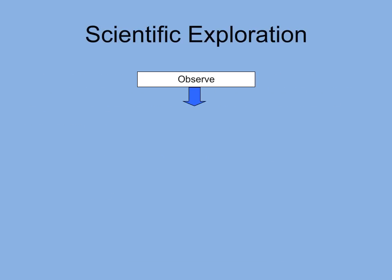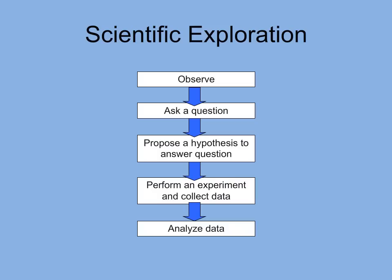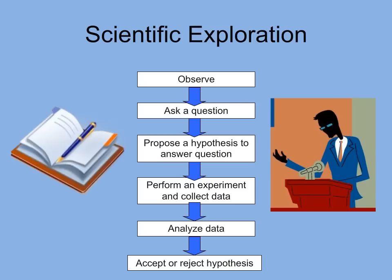Hypothesis testing is accomplished through the scientific method. The basic steps of the scientific method are: observation of a phenomenon, asking a question about the phenomenon, forming a hypothesis based on the question, experimentation and collection of data, analyzing the data, and acceptance or rejection of the hypothesis. The hypothesis can be revised if necessary, and you do need to report your findings to the scientific community.